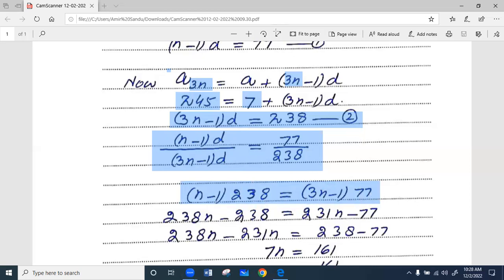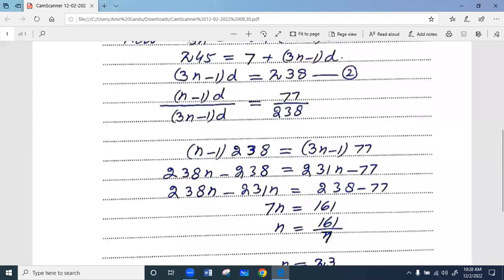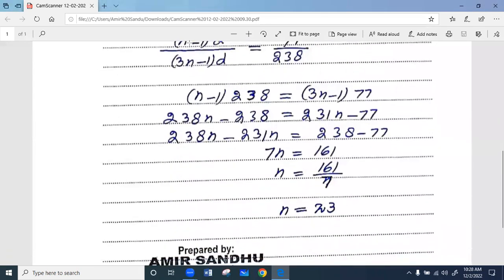After simplification, we have an equation in terms of n. From further simplification, finally we have 3n equals 161.